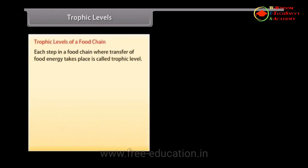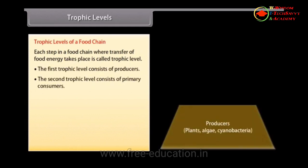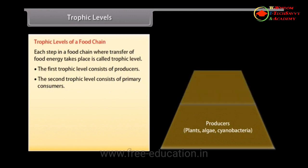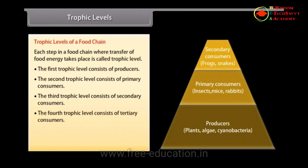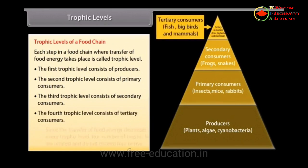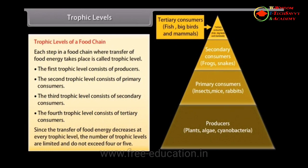Trophic Level: Each step in a food chain where transfer of food energy takes place is called a trophic level. The first trophic level consists of producers, the second of primary consumers, the third of secondary consumers, and the fourth of tertiary consumers. Since the transfer of food energy decreases at every trophic level, the number of trophic levels is limited and does not exceed 4 or 5.